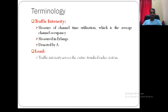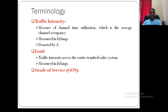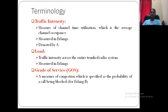Grade of service is another name for probability of blocking. When a user requests a call, whether the call is blocked or service is provided determines the grade of service. For example, a probability of blocking of 0.01 means out of 100 calls you are blocking 1 person. Grade of service measures how congested your channels are — when all channels are occupied and a new call arrives, that call gets blocked.